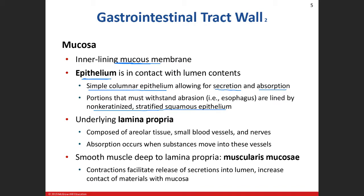Underneath the epithelium we have our lamina propria — a loose areolar connective tissue. This is where we see our first group of blood vessels and some nerves. The digestive system is heavily innervated; we'll have the autonomic nervous system and the enteric nervous system innervating various portions. In the lamina propria during the absorption phase, our goal is to get absorbed substances into the blood vessels and distribute them throughout the body.